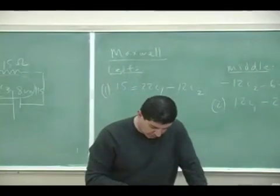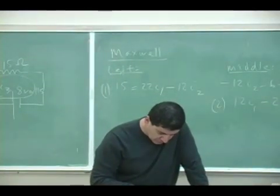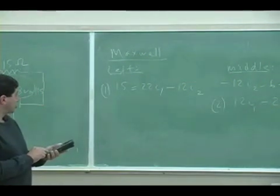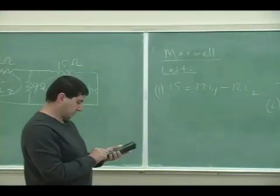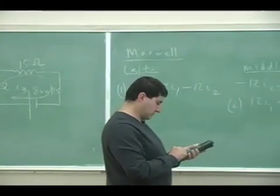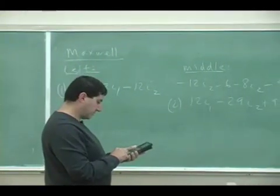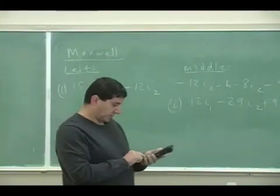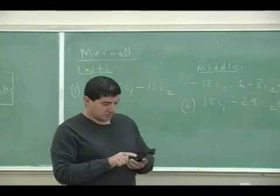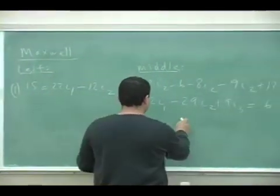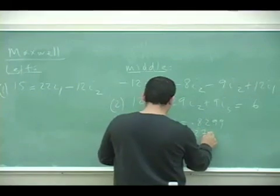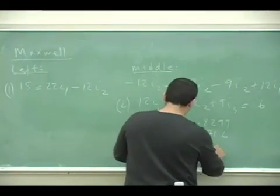Then I put it into my simultaneous solver: 22, negative 12, 0, 15 for the first row; 12, negative 29, 9, 6 for the second; and 0, negative 9, 24, 8 for the third. I1 is 0.8299, I2 is equal to 0.2716, and I3 is equal to 0.4352.